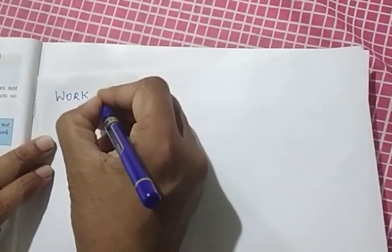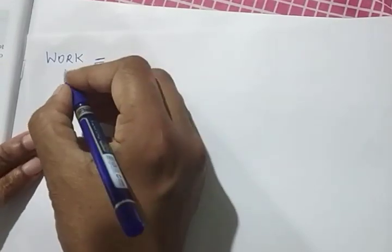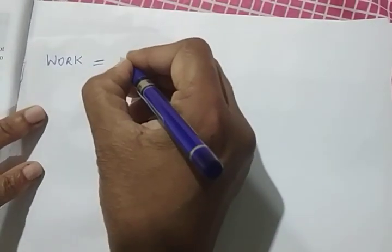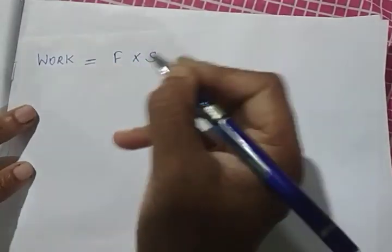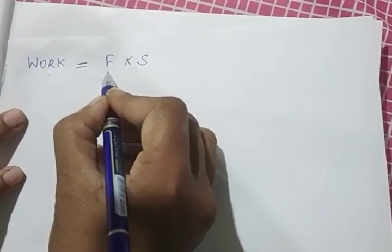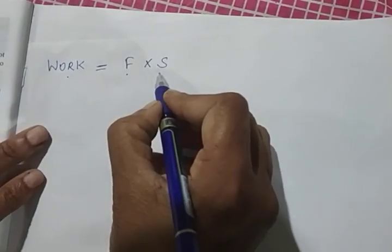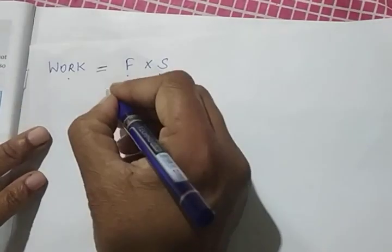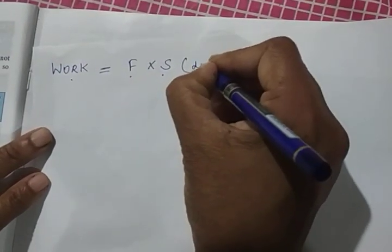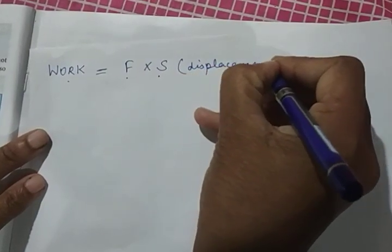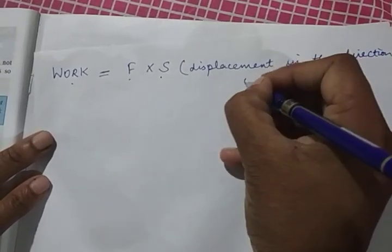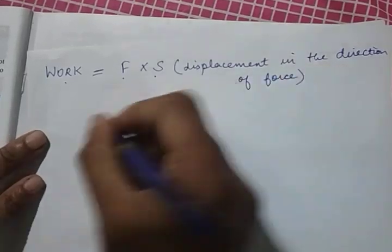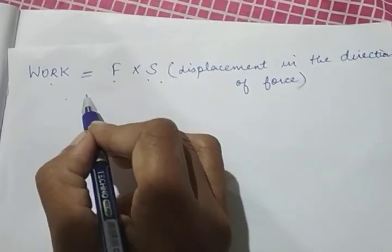So these are familiar terms you have studied in lower classes, but let's study them in detail. When is work said to be done? Work is said to be done when force is applied on a body and the body moves through some displacement in the direction of force. It is very important that this displacement should be in the direction of force.